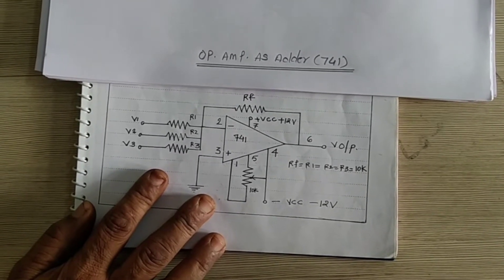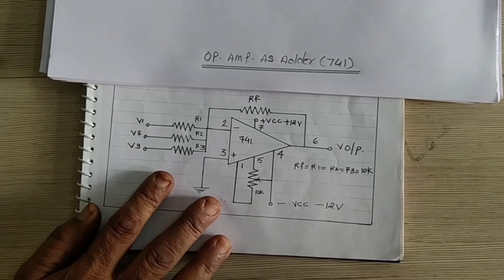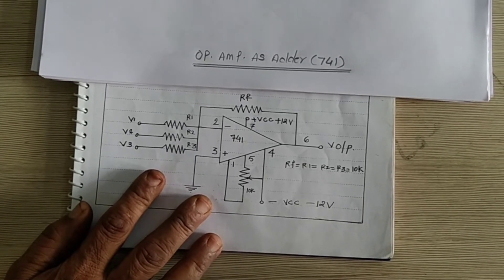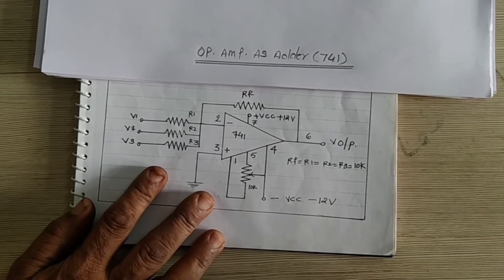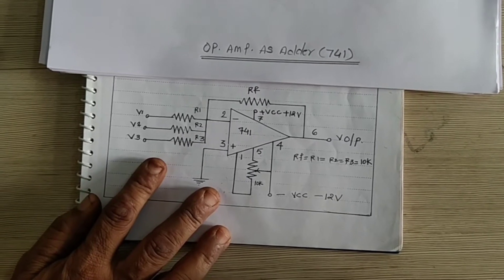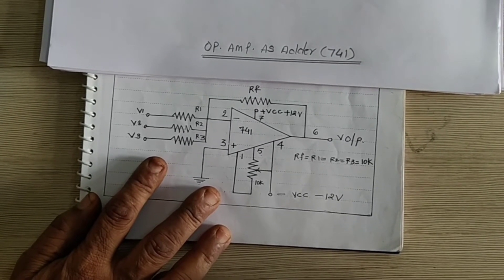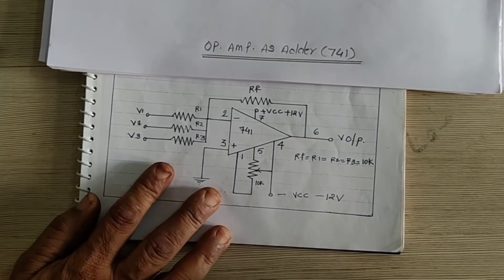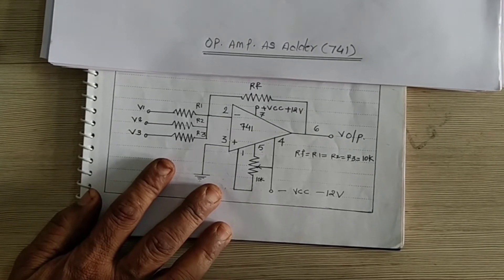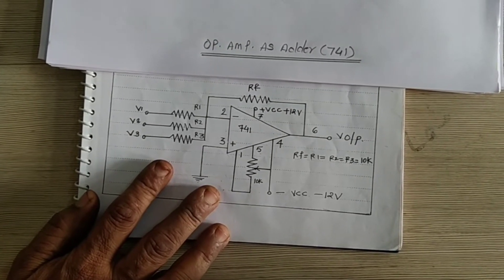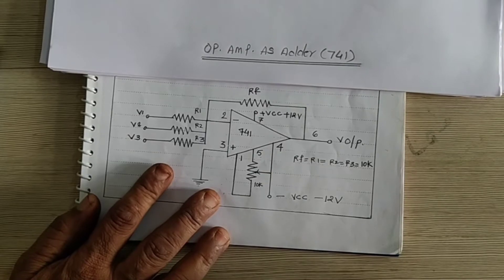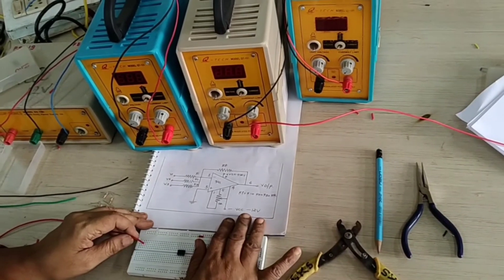Let the voltages V1, V2, V3 be applied at the input terminal through R1, R2, and R3 respectively. The non-inverting terminal is ground. The inverting input terminal is at virtual ground potential. See, we are assembling the circuit.